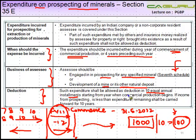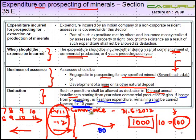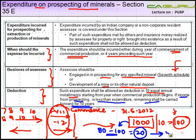If income from prospecting in any year is less than the installment deduction — for example, income is 80 but the deduction is 100 — the remaining 20 cannot be claimed that year and is carried forward for up to 10 years. In the next year, if income is 120, you can set off the carried-forward 20 plus the current year's installment of 100 against that income.